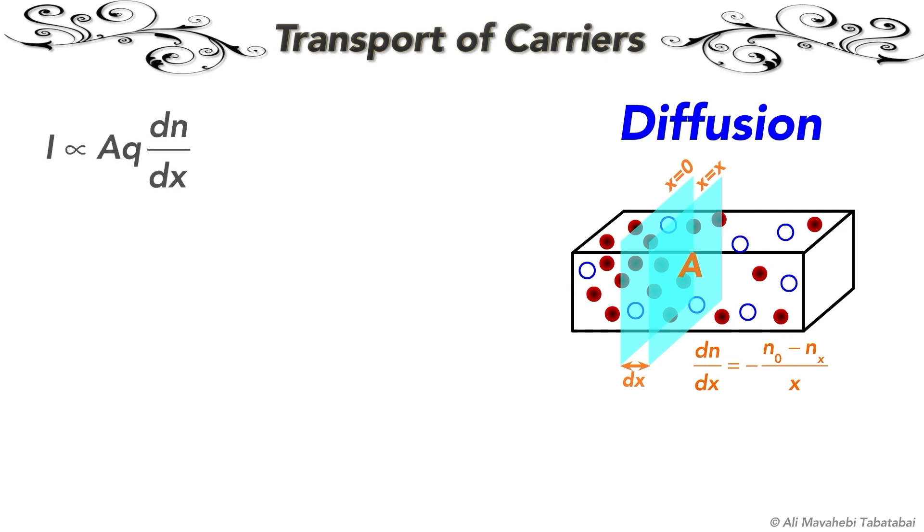The diffusion current is proportional to the cross-section area A, charge of the electron or hole Q, and the concentration gradient, which is dN over dx or dP over dx.